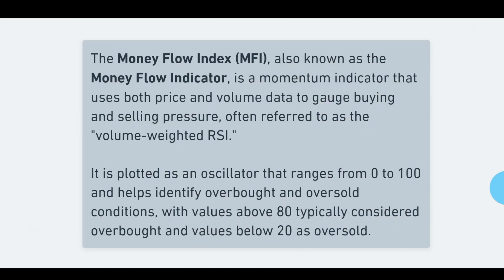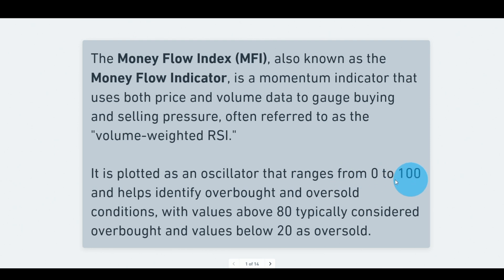The Money Flow Index, also known as the Money Flow Indicator, is a momentum indicator that uses both price and volume to gauge buying and selling pressure. It's often compared to the RSI, and since RSI uses only price, this one is called the volume-weighted RSI because it adds volume. It is plotted as an oscillator ranging from 0 to 100, and typically a value above 80 is considered overbought and below 20 is oversold.